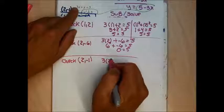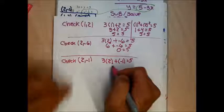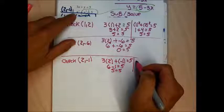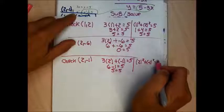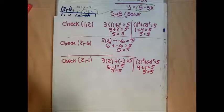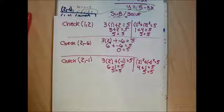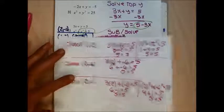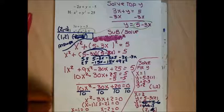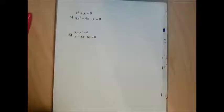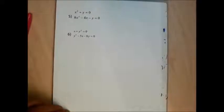For problem 5, the best first step is to solve the top for y. Starting with x² + y = 0, subtract x² from both sides to get y = −x². Now substitute −x² in for y in the bottom equation. There's already a minus in front of the y, so substituting gives a double negative: 8x² − 4x − (−x²) = 0, which becomes 8x² − 4x + x² = 0, or 9x² − 4x = 0.